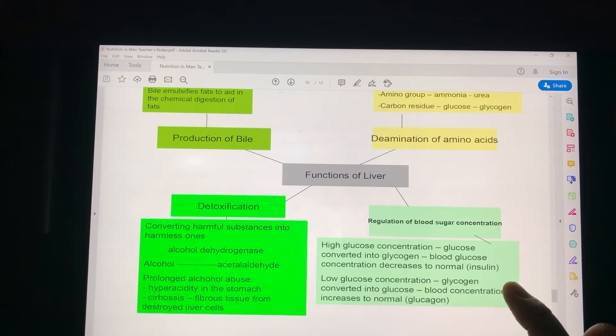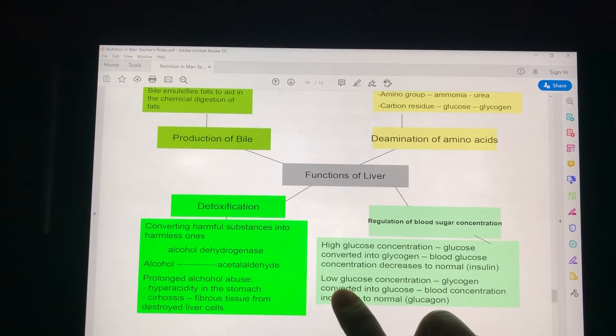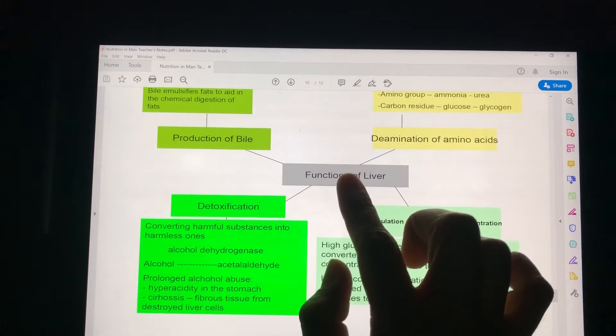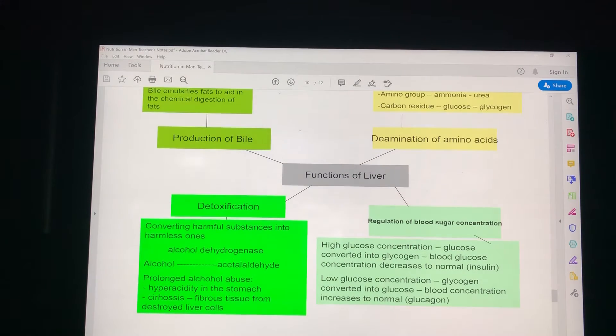When in between your meals or when you have low glucose concentration, then the glycogen is converted into glucose. The glycogen that is stored in the liver is converted into glucose to restore your blood glucose level to normal. So that is the function of the liver with regards to regulating blood sugar concentration.